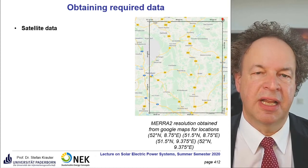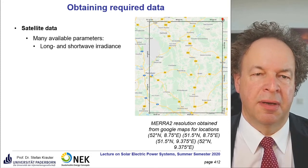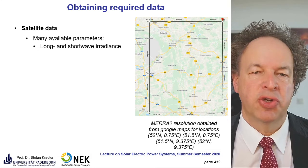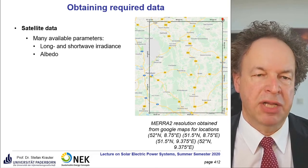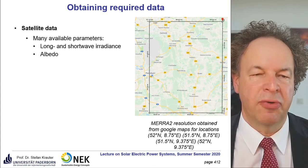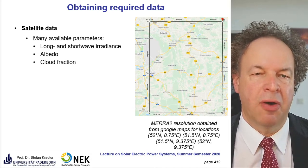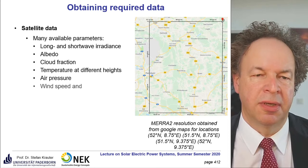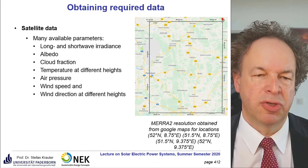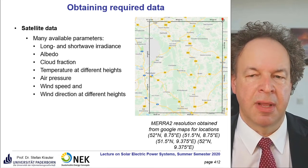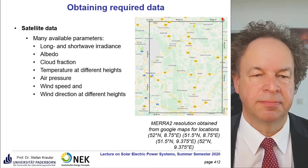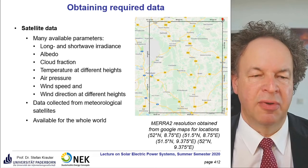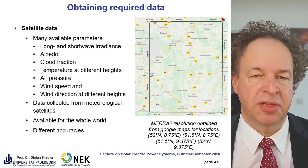Available parameters in satellite programs like MERRA-2 include long and short wave irradiance, albedo information — what the satellite actually sees is often just the albedo, i.e., ground reflection — incorporated cloud fraction, temperature at different heights, air pressure, wind speed, and wind direction at different heights. Wind speed is usually measured at 10 meters height, but modern wind turbines go above 100 meters. Satellite data is available for the whole world with different accuracies, so you should check what accuracy you need.